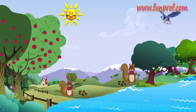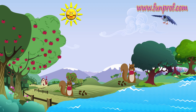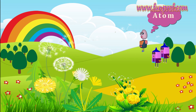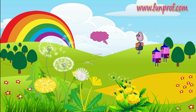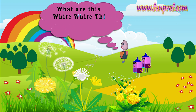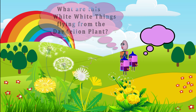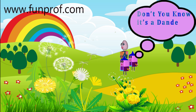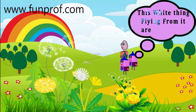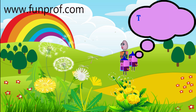Do you want to listen to a story about them? I will tell you. Adam and his friend saw a dandelion plant. Adam asked his friend, what are these white things flying from the dandelion plant? His friend said, don't you know it's a dandelion plant? These white things flying from it are dandelions — they disperse by wind.